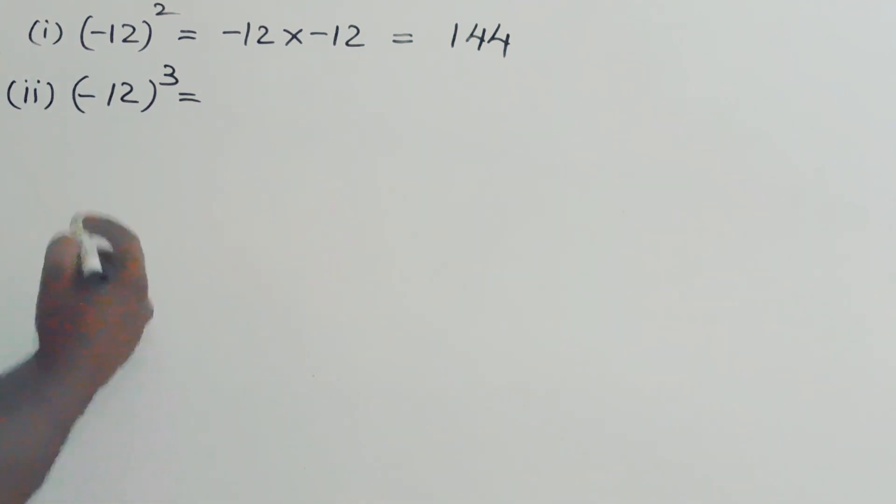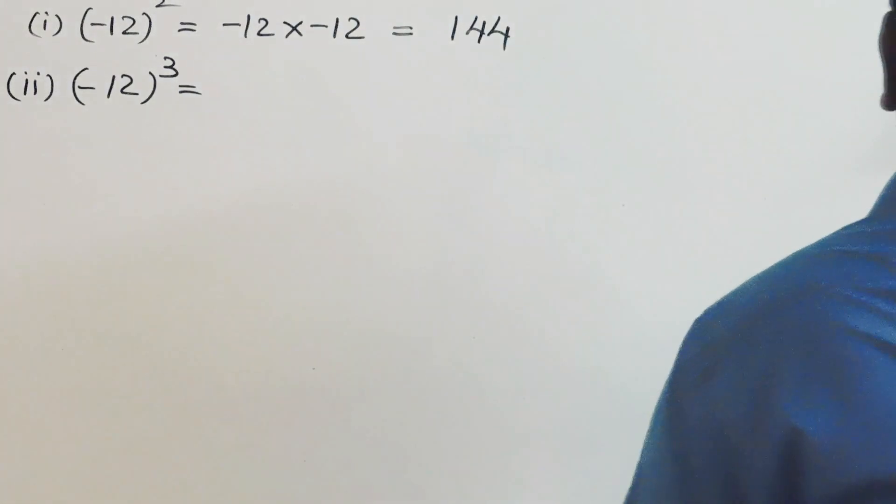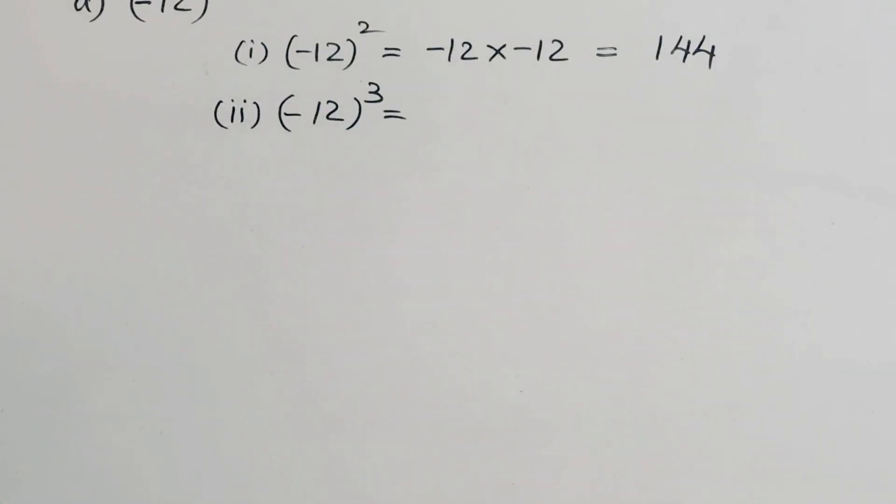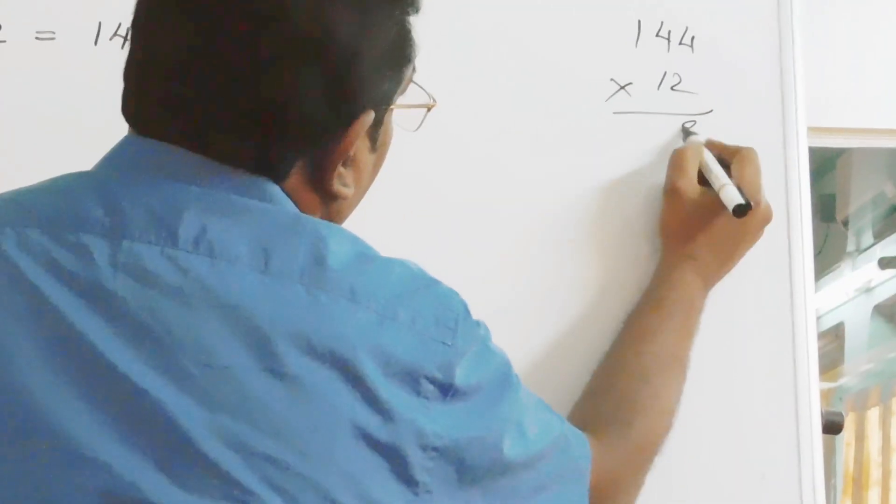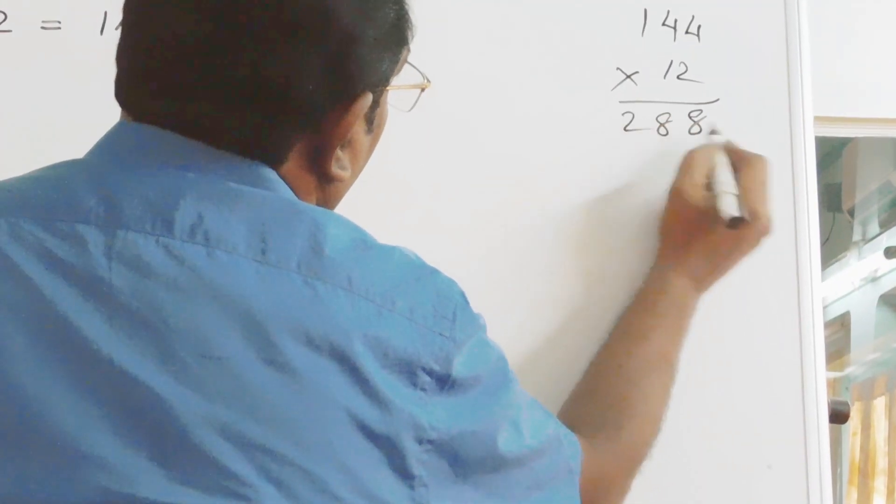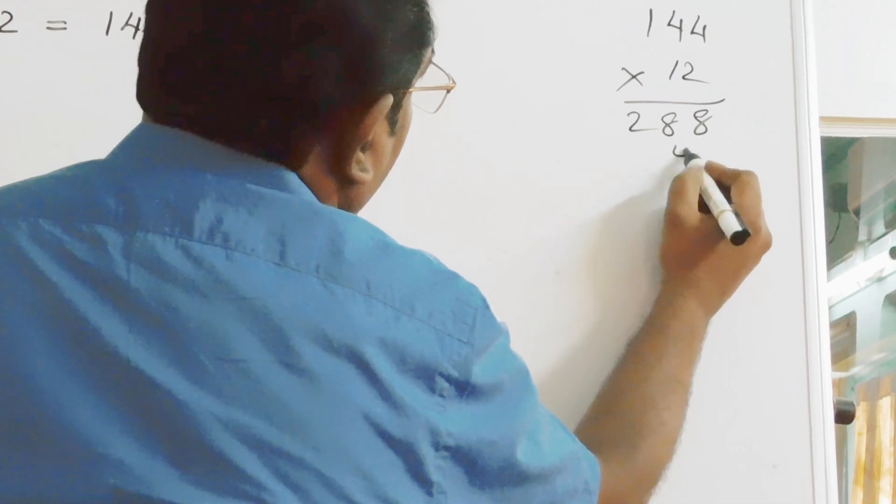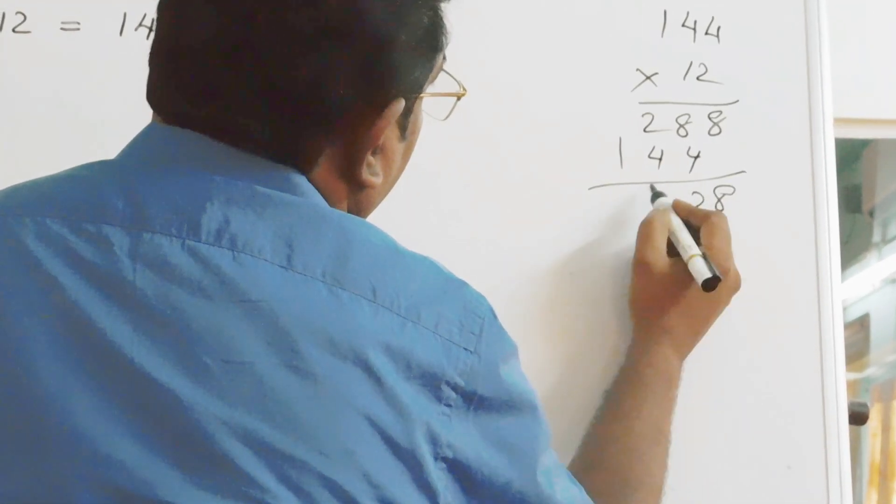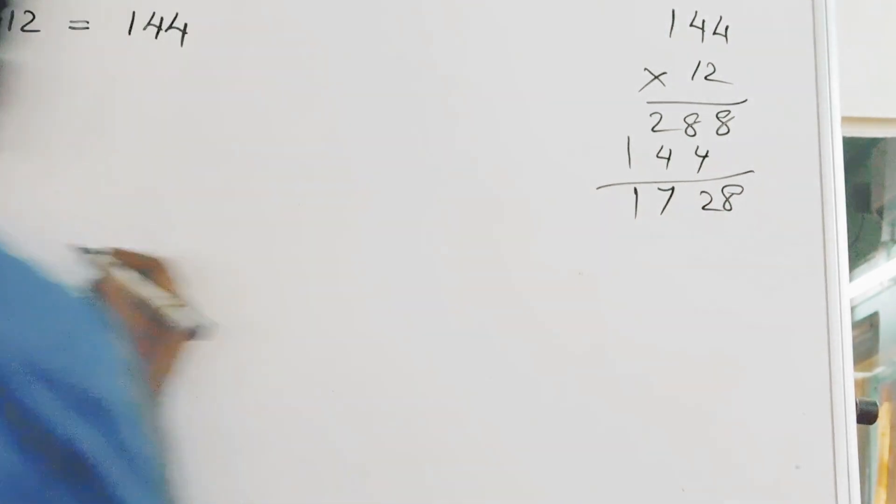Yes, now, we have to find out minus 12 cube. We have to multiply 12 three times. We already multiplied 12 into 12, we got 144. So, we will multiply one more time. Two fours are eight, two fours are eight, two fours are two, four ones are four, four ones are four. So, we got 1728.